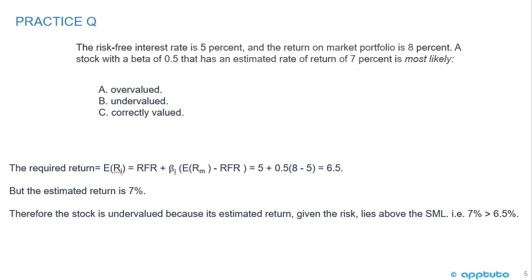Be careful — sometimes we see the terms expected return, estimated return, and forecast return used interchangeably. The 7% estimated return is what we compare versus the CAPM required return. Since the estimated return is higher than the required return, the stock is undervalued and lies above the security market line. When correctly valued, the forecast return equals the required return.